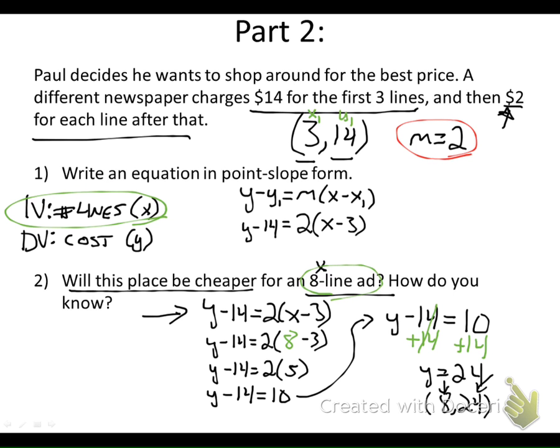Will this place be cheaper? The answer is yes, because if you remember back to that previous slide, for them for eight lines it was $28. Here for eight lines it's $24. We may not be used to using point-slope form of a line to solve word problems, but if you do get to where you're somewhat fluent with it, it can be just as easy and just as natural as using slope-intercept form.